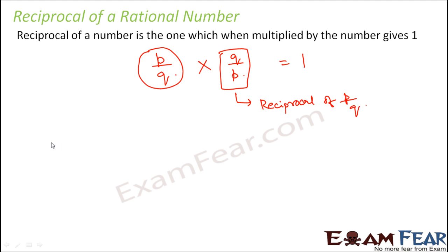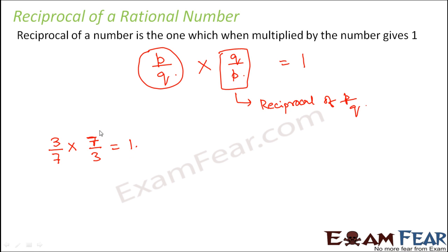Let us look at some examples. Let us say 3 by 7 is a rational number. What would be the reciprocal of 3 by 7? So 3 by 7 when multiplied by 7 by 3 gives 1. That means 7 by 3 is the reciprocal of 3 by 7, and you can also say 3 by 7 is the reciprocal of 7 by 3.